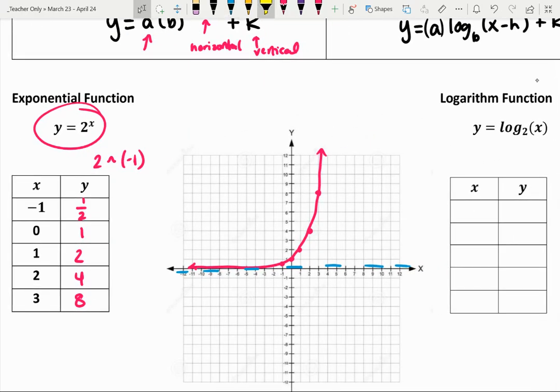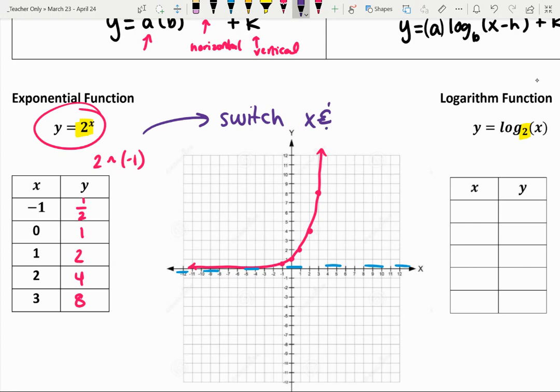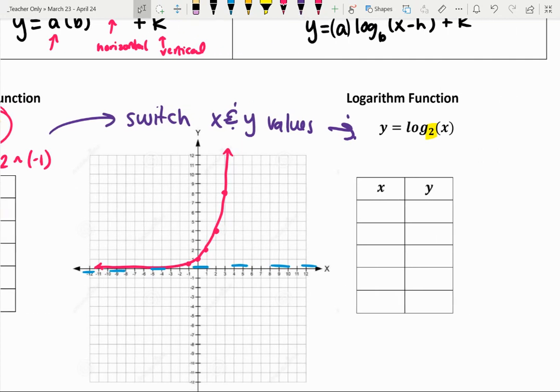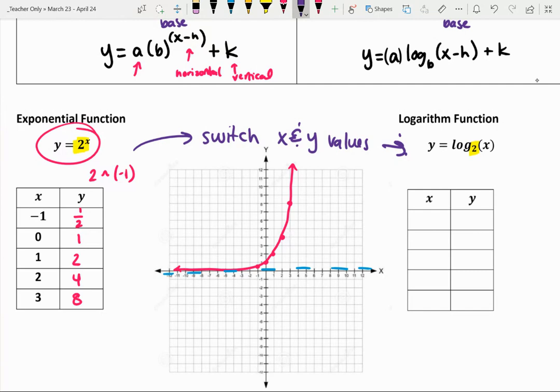Now notice that this associated logarithmic function log base 2 of x has the same exact base as the exponential function we just graphed. So a strategy here is if we know the exponential function we can really easily graph the logarithmic function by switching the x and the y values. Obviously I could use my calculator. Desmos is really great for evaluating logarithms, but an easy way to do this is just to switch my x and my y values. So I would have 1/2, negative 1. I would have 1, 0, 2, 1, 4, 2, and 8, 3.